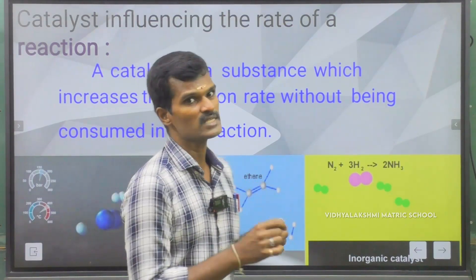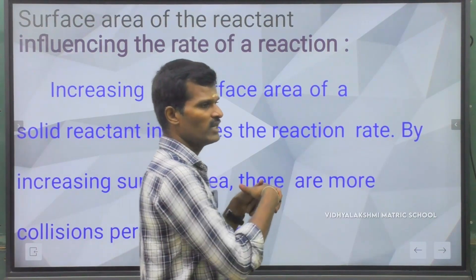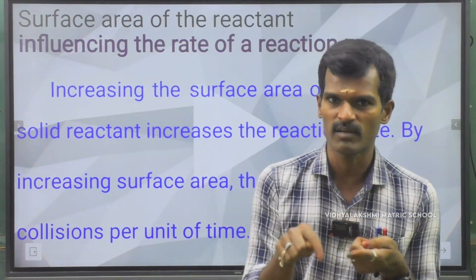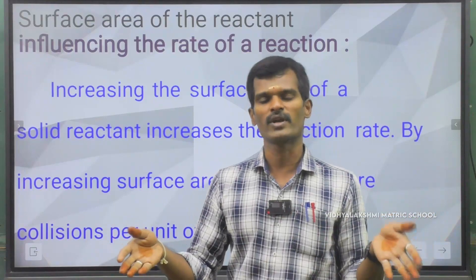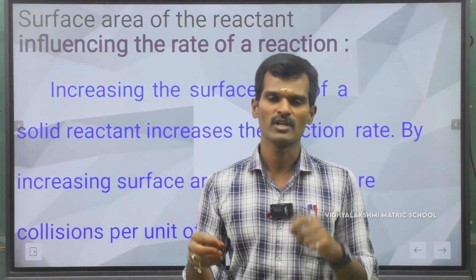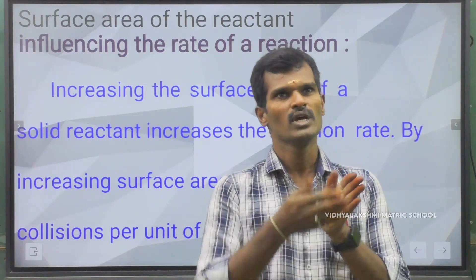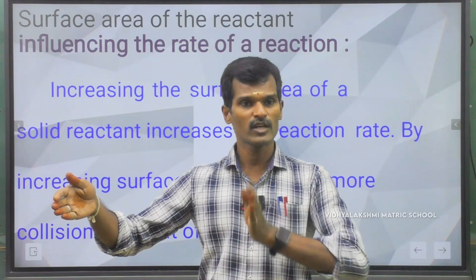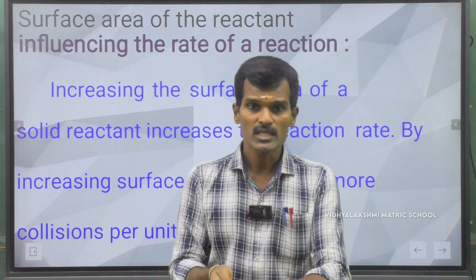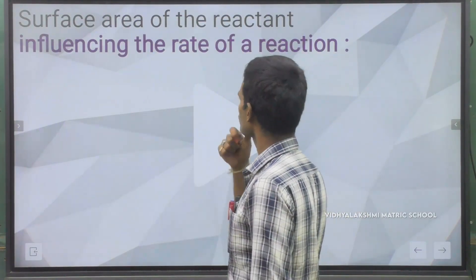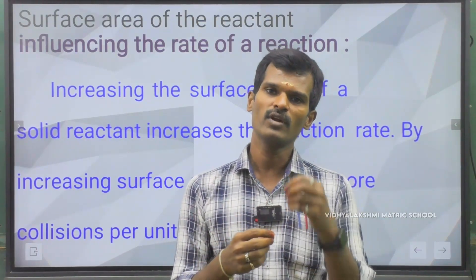An important example of a catalyst is the Haber process for ammonia formation, where iron is used as the catalyst. For surface area: small pieces of iron rust faster, while a large surface area of iron means a larger quantity of rusting occurs in the presence of the environment. When we increase the surface area, the rate of reaction is faster; when we reduce the surface area, the rate of reaction is lower. We will see the remaining content of unit number 10 in our next class. Bye.